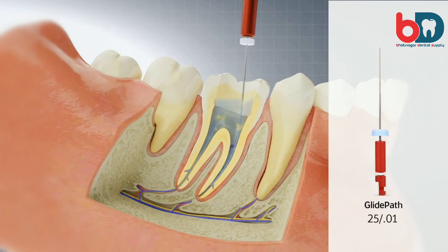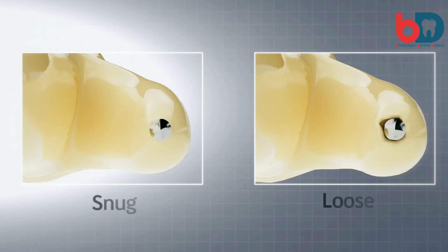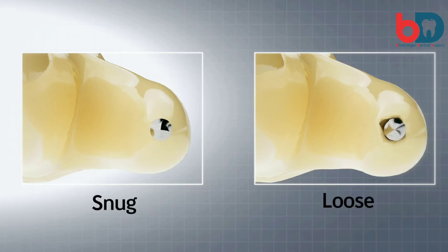If patency is achieved, determine whether it is snug or loose. This is evidenced by how easily the file reaches working length, and will indicate the foramen diameter.